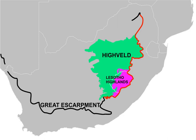The Heiveld constitutes almost the whole of the Free State and Gauteng provinces, and portions of the surrounding areas: the western rim of Lesotho, and portions of the Eastern Cape, Northern Cape, North West, Limpopo, and Mpumalanga provinces of South Africa.